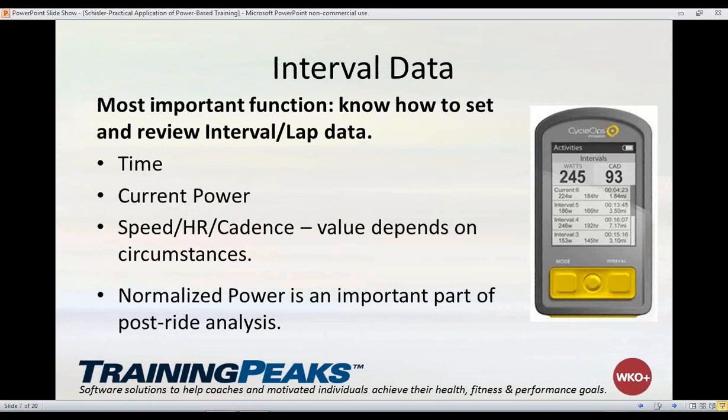With interval data, the most important thing overall is knowing how to set and review your interval and lap data on the computer. You can see on the Joule image there's a very obvious interval button; with Garmin they use a lap button. The power meters try to design a simple head unit where you can hit that button, store that data, and hit it again at the end of the interval. Some even allow you to set up workouts beforehand so it'll automatically section off those intervals for you. The specific interval data you'll want to see is time, current power, and depending on circumstances, speed, heart rate, or cadence.